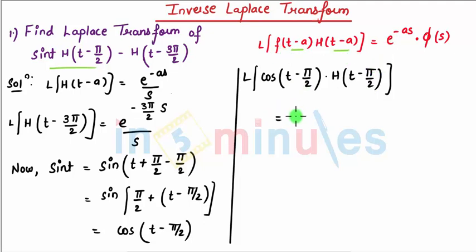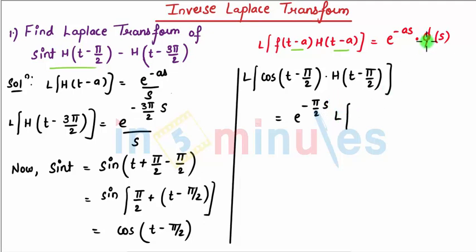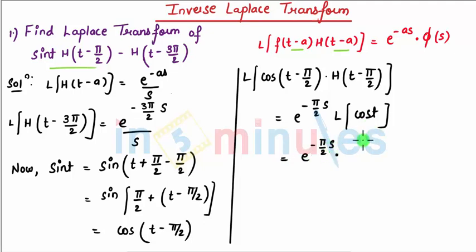Here Φ(s) is the Laplace of the original function f(t) = cos(t). So the Laplace of cos(t - π/2) * h(t - π/2) equals e^(-(π/2)s) * Φ(s), where Φ(s) = s / (s² + 1). The final expression for this term is e^(-(π/2)s) * s / (s² + 1).